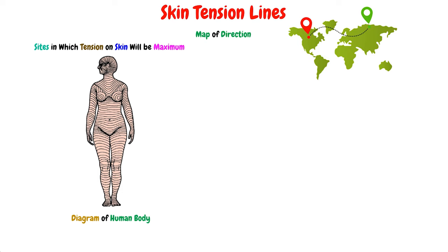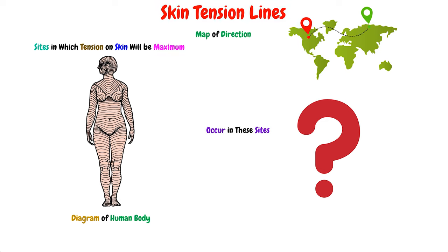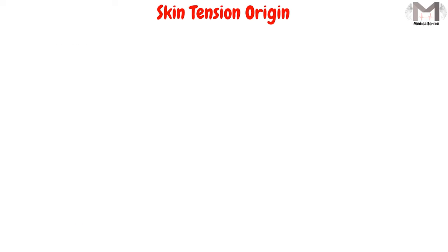Now we know that the skin tension lines illustrate the maximal tension on the skin in different body regions. But we didn't know why the maximal tension occurs at these specific sites and not others, or where these lines originate from. In order to understand the origin of these tension lines, we should clarify the following two things.